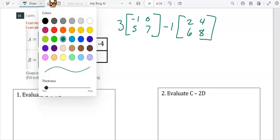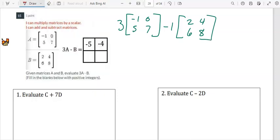When we multiply by a scalar, we multiply by each element. So we're going to have times 3 for all four of those elements.